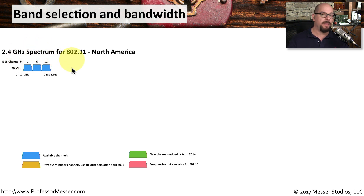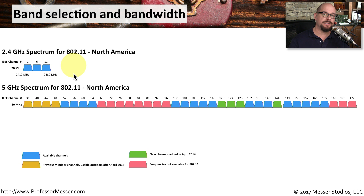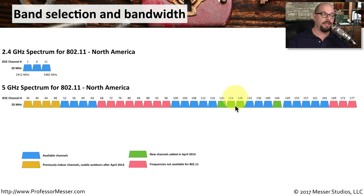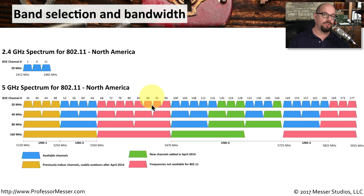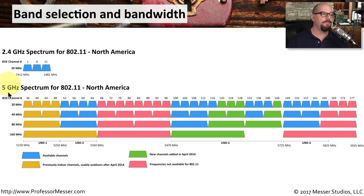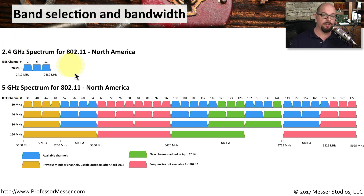In the 5 GHz spectrum, look at the differences in available channels. Everything marked yellow, blue, and green is available to be used in the 5 GHz range, while anything marked in red is not available for 802.11 networks. If you use larger bandwidths for the 802.11 standard, you can see the differences for 40 MHz, 80 MHz, and 160 MHz bandwidths in the 5 GHz spectrum. There is a significant difference in frequency availability for 5 GHz compared to the much more crowded 2.4 GHz spectrum.